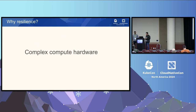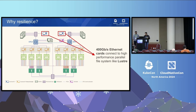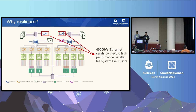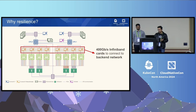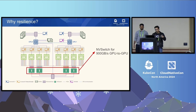So why do we need fault tolerance for AI workloads? Inherently, AI hardware is complex. Here you see the schematic of a DGX H100/200 system. In addition to typical CPU server components — CPU SOCs, DRAM, NVMe drives, and fans — there are additional components: 400 GbE cards connecting to high-performance parallel file systems like Lustre, eight InfiniBand cards connected to the back-end network, and GPUs (H100/200) all connected to each other via NVSwitch over a 900 GB/s GPU-to-GPU interconnect.